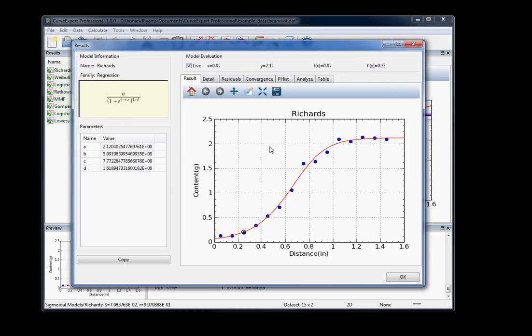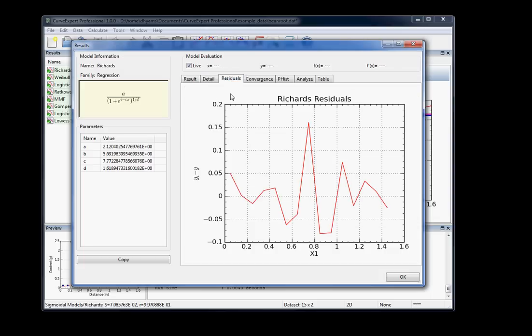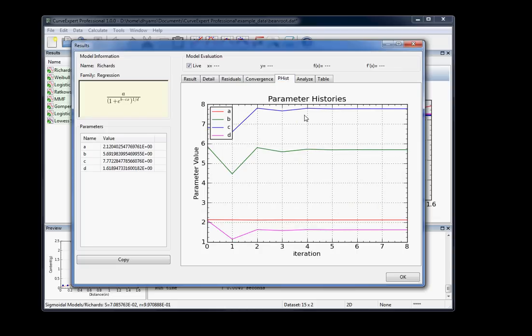It'll show you the parameters, the equation, a nice little evaluator that runs along the result line there. If you want to get detail on standard area, covariance matrix, parameter uncertainties, and things like that, it's here. You've got a residual plot, residual history, parameter histories as a function of iteration there.